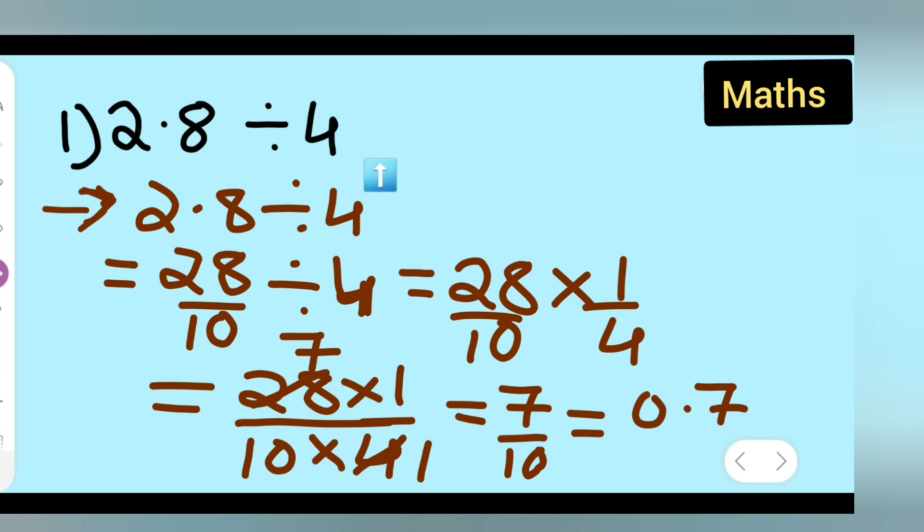This is the way you have to divide a number with a decimal point. I hope you've understood how to divide the given number, 2.8 divided by 4. The answer will be 0.7, because 4 ones are 4, 4 sevens are 28.